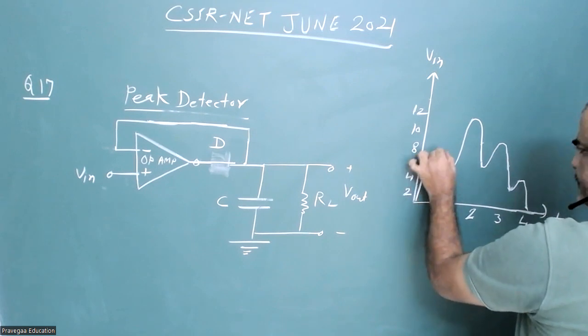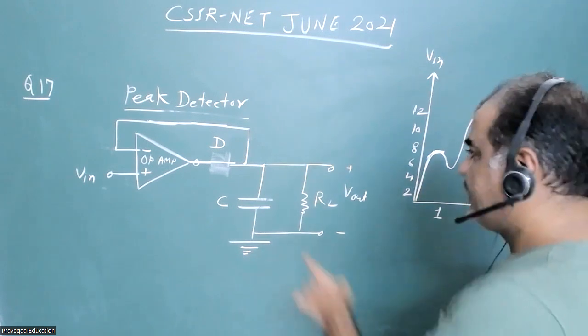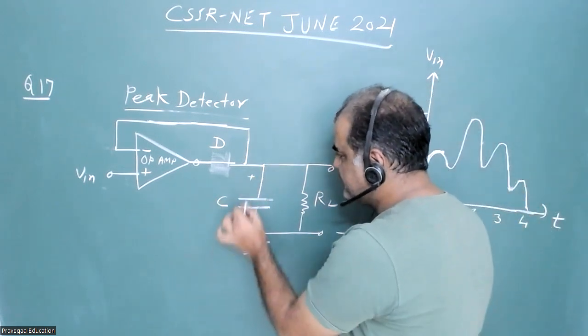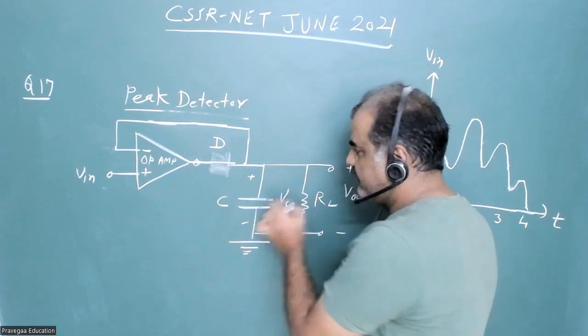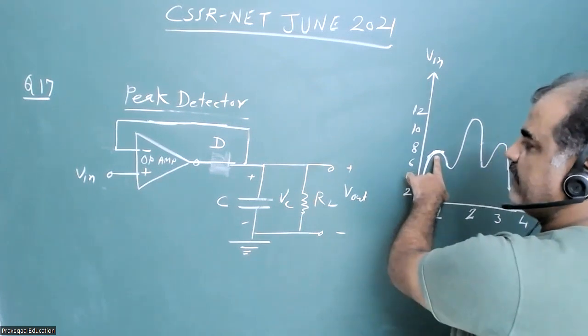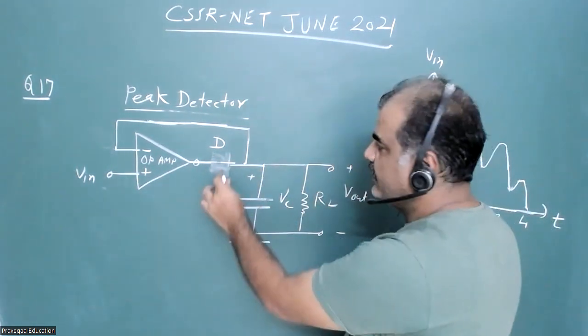Now what happens when the input decreases? So we have suppose VC value. Now if the input decreases compared to this peak value, what will happen? This will make this diode reverse biased.